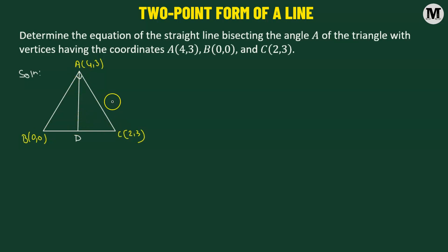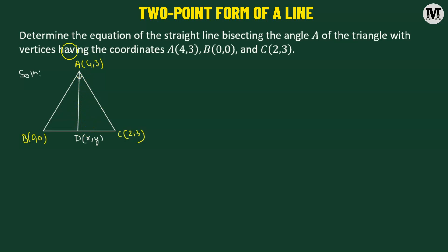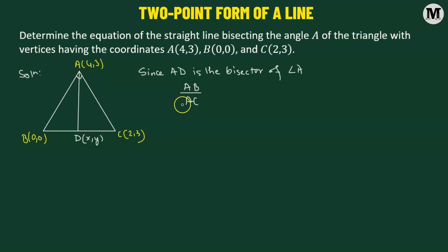Now in order to find out the equation of AD, we'll be needing to find out the coordinates of D which we will assume as X, Y. Now we know that since AD is the bisector of angle A, then we can say that the ratio of side AB to that of AC — the sides adjacent to angle A — will be equal to BD to DC. So let this be equation number 1.